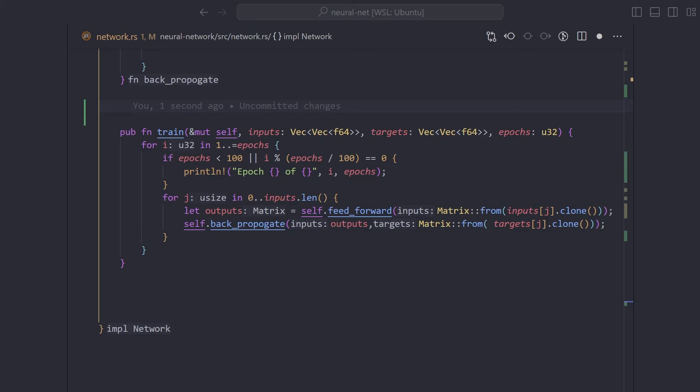This function called train is the main loop of our program. We're simply running feed forward and backpropagate hundreds or thousands of times until our network is finally tuned and ready to be used.